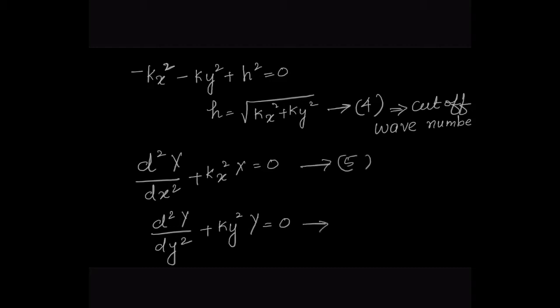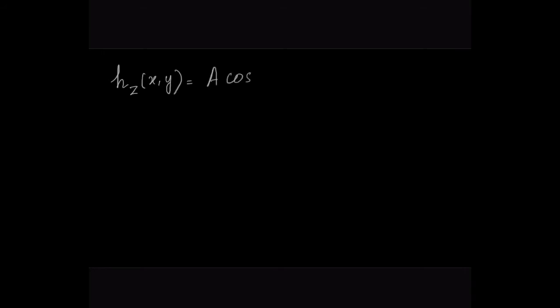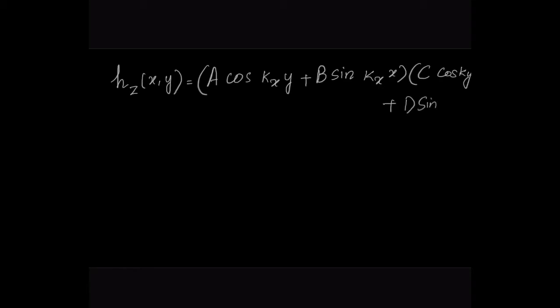Equations 5 and 6 are ordinary second-order differential equations. The general solution can be written as Hz(x,y) = (A·cos(kx·x) + B·sin(kx·x))·(C·cos(ky·y) + D·sin(ky·y)). This is the general equation for the magnetic field of a rectangular waveguide.